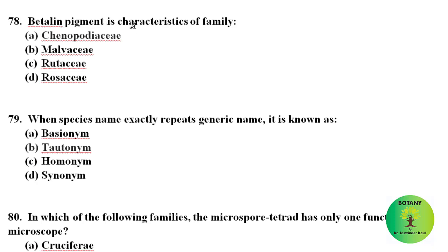Betalain pigment is a characteristic feature of family Chenopodiaceae. When a species name exactly repeats the generic name, it is known as a tautonym. Tautonyms are not acceptable in botanical nomenclature, but they are acceptable in zoological nomenclature.